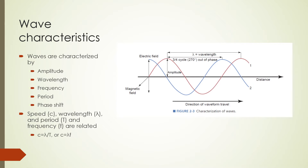The quantities characterizing electromagnetic waves are: amplitude, wavelength, frequency, period, and phase shift or phase difference. Let's start off by looking at each quantity individually.